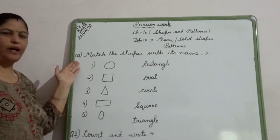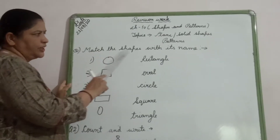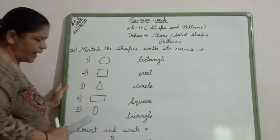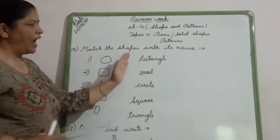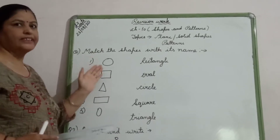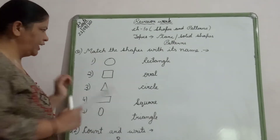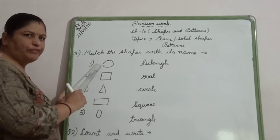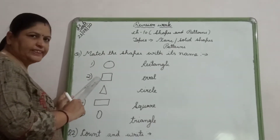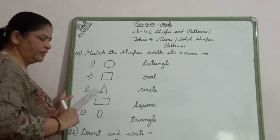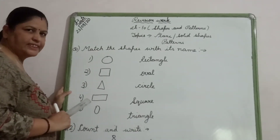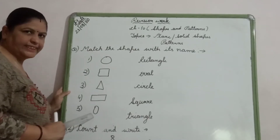Look at question number 1: Match the shapes with its name. On one side some shapes are there and on the other side names have been written. You have to match the correct shape with the correct name. Can you tell me which shape it is? This is circle. This is square. This is triangle. This is rectangle. And this is oval.